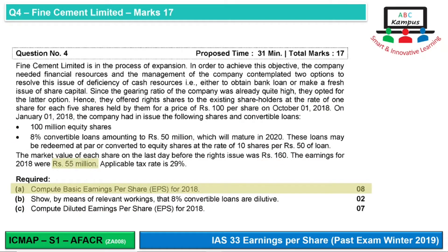For basic EPS, we have earnings of 55 million already given. We now need to calculate the shares. Because there is a right issue, we need to calculate the theoretical ex-right price. We already have 100 million equity shares, and the company issued one-for-five shares; the market value before issue was Rs. 160.